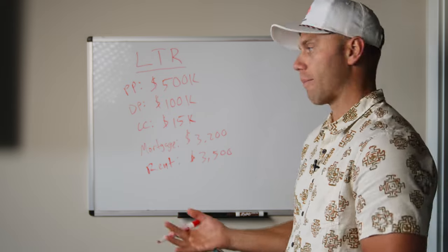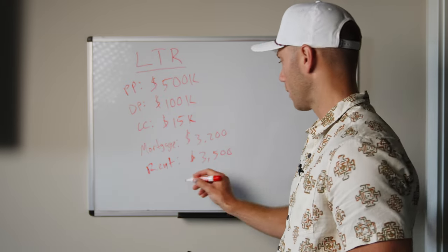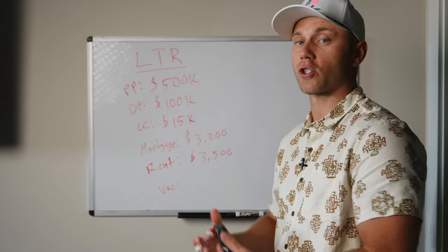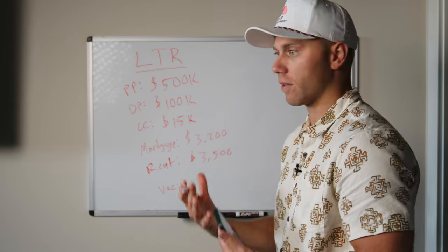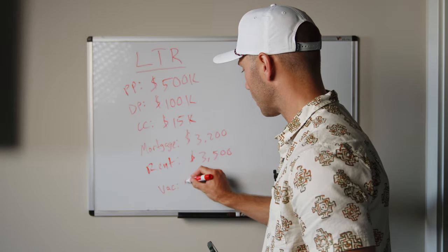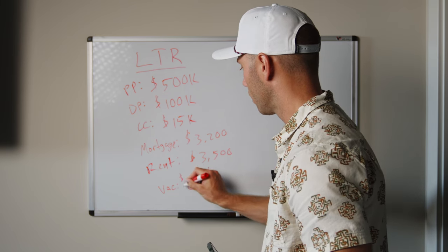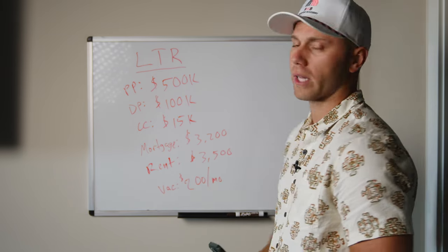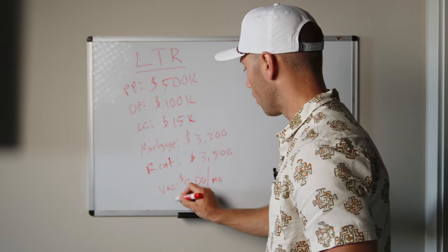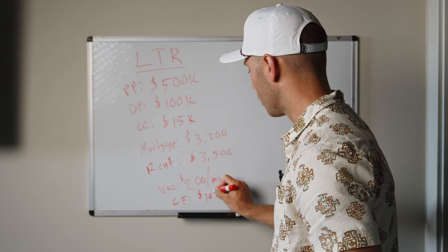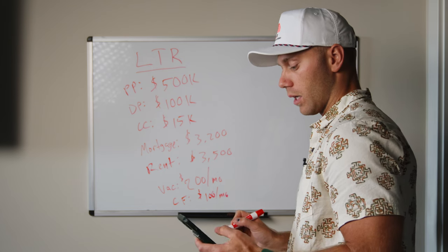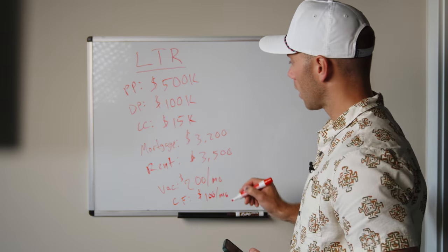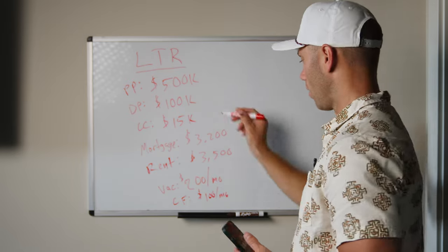Of course, we have to budget for things like CapEx and vacancy. Vacancy alone — let's say we're budgeting $200 a month. Vacancy means if you rent the place out for a year and the tenant moves out, it takes you an extra month to fill the unit — you have to eat that mortgage and holding cost. So we're left with $300 minus $200 vacancy, leaving us only cash flowing about $100 a month — and that's not even including CapEx. So cash flow is $100 a month, or $1,200 a year on $115,000 invested. Pretty poor return on your money.